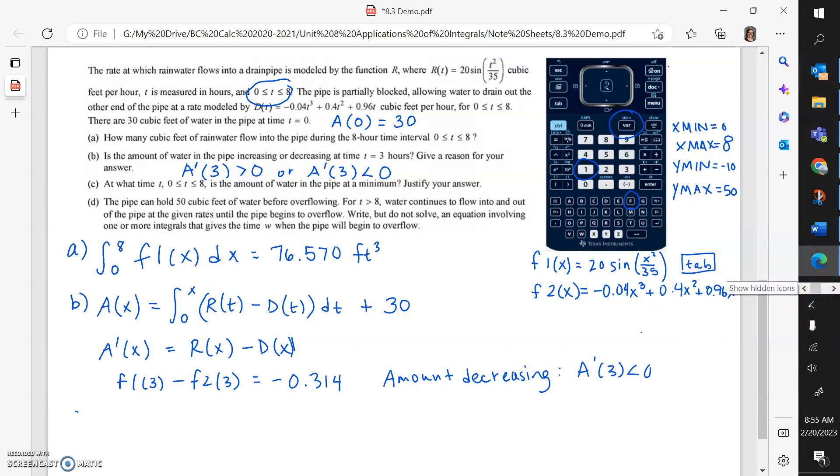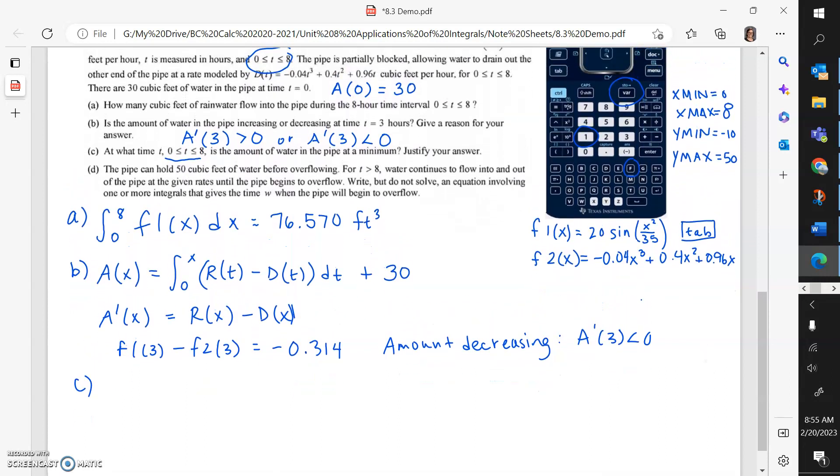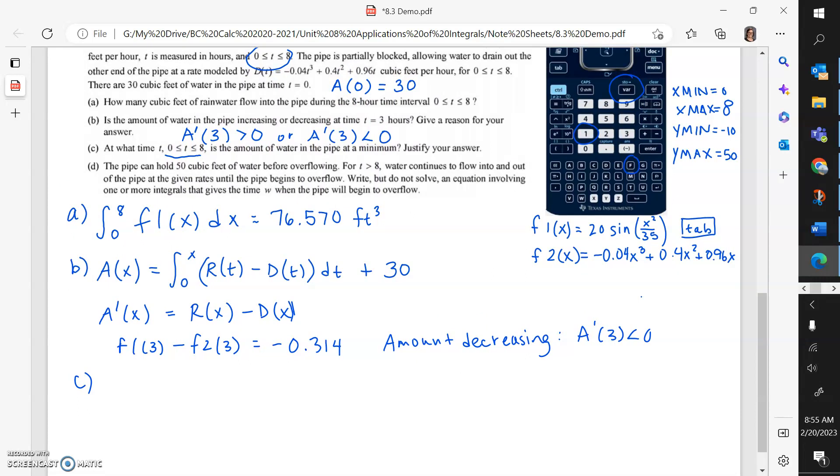Part C. At what time from 0 to 8, notice how it's including the endpoints, is the amount of water in the pipe at a minimum? The easiest way to justify a minimum is to show, on a closed interval, the candidate's test. So we're going to use this amount equation. The amount equation is the integral. We're going to find out critical points and endpoints for this amount equation.